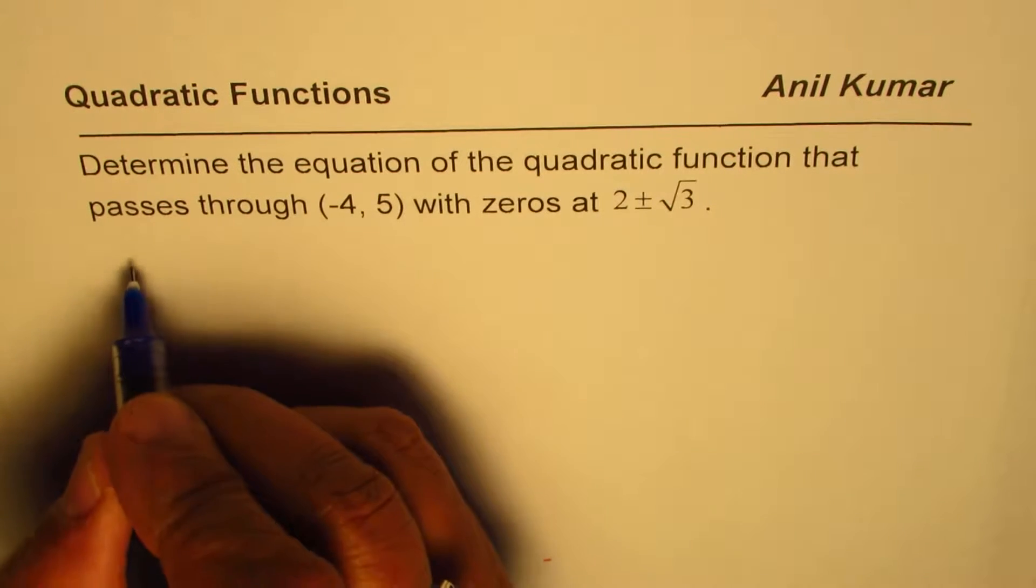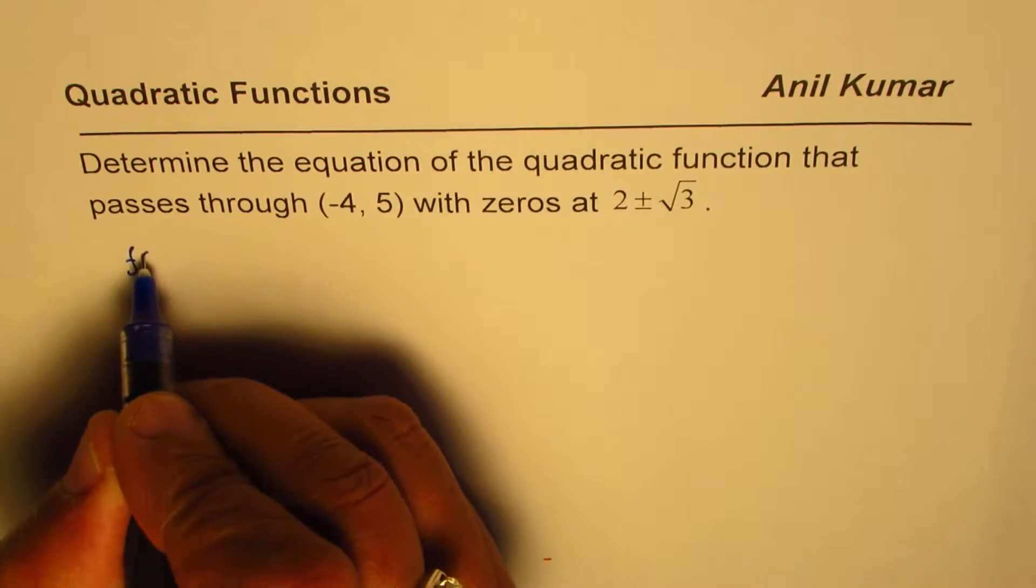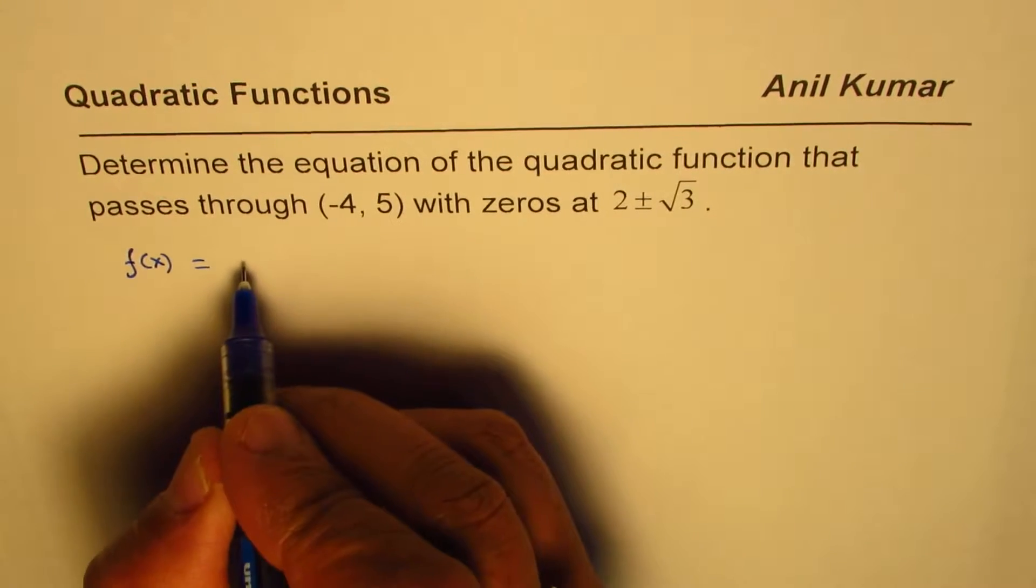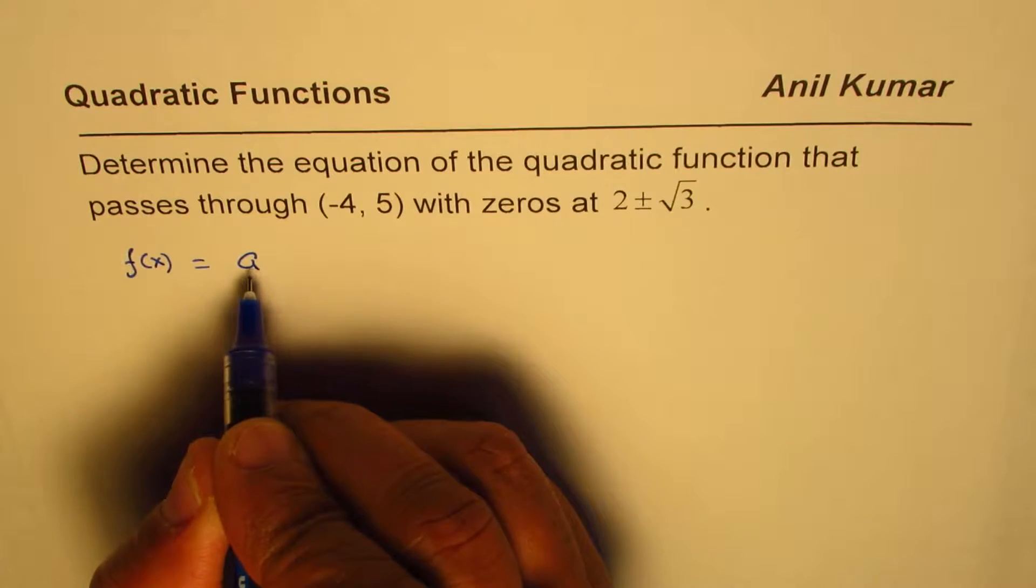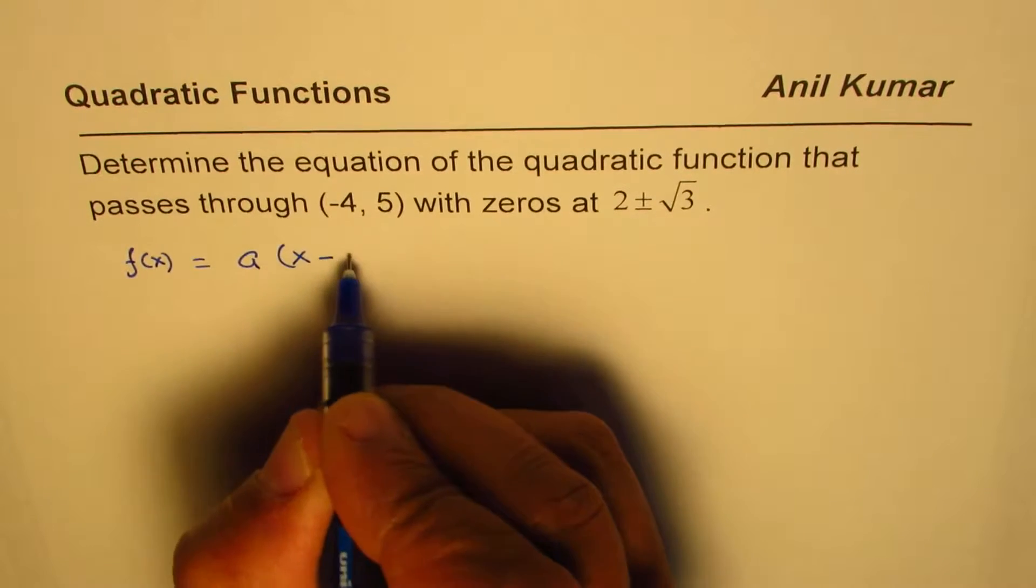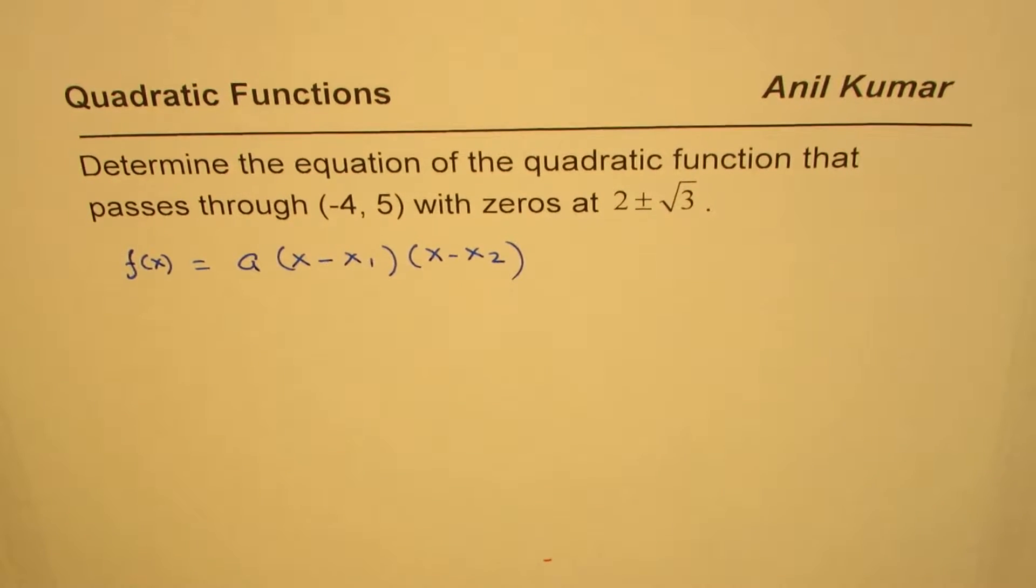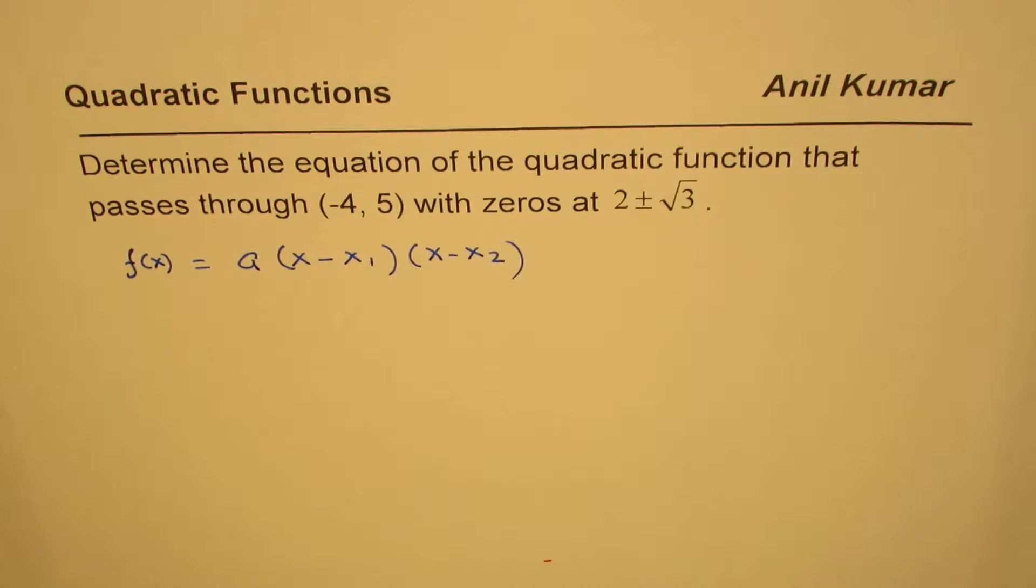In general, if the zeros are given to us, we can write it in factored form as f(x) = a(x - x₁)(x - x₂). So in general we can always write it in this form.